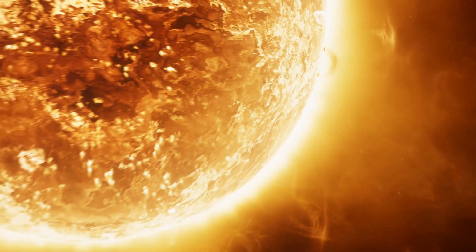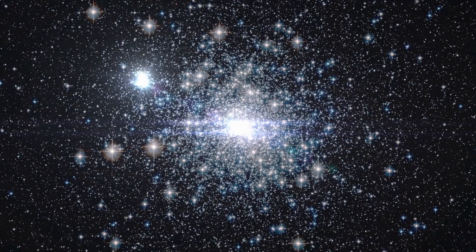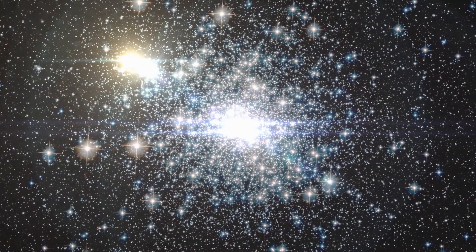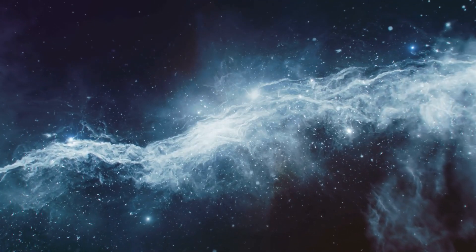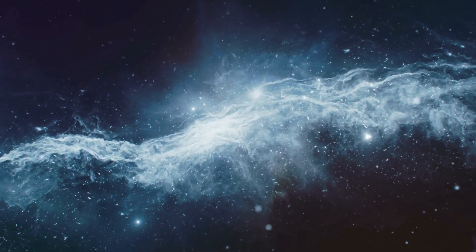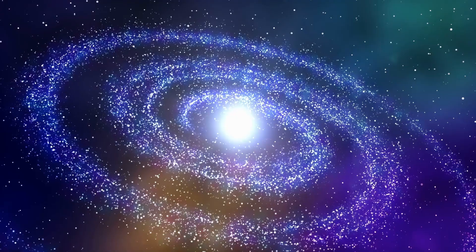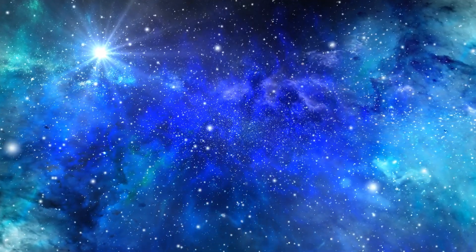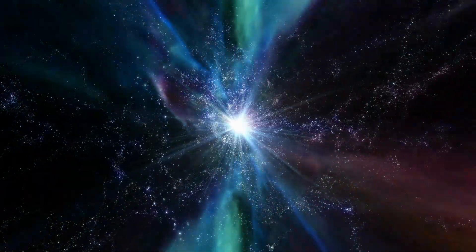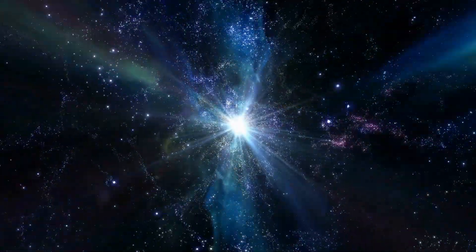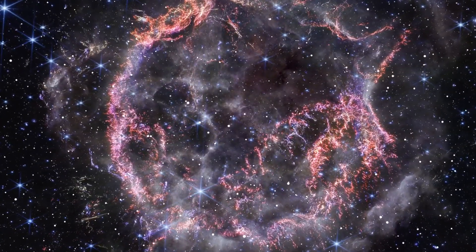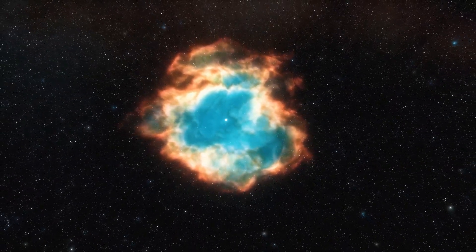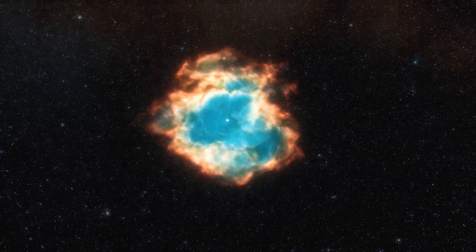In contrast, the formation of a new star like our sun involves the gravitational collapse of a giant molecular cloud composed mostly of hydrogen and helium gas. Over time, the core of this collapsing cloud becomes dense and hot enough to ignite nuclear fusion, giving birth to a new star. This process typically takes millions of years and is quite distinct from the relatively rapid and temporary burst of energy associated with a nova explosion. Therefore, while novas are fascinating cosmic phenomena in their own right, they do not have the transformative power to spawn a new star capable of replacing our sun.